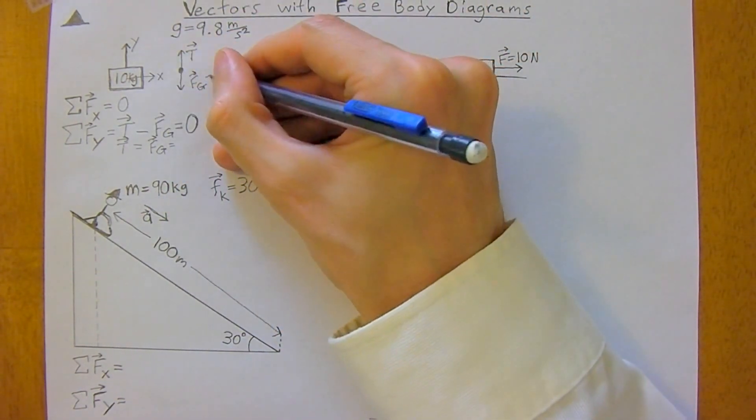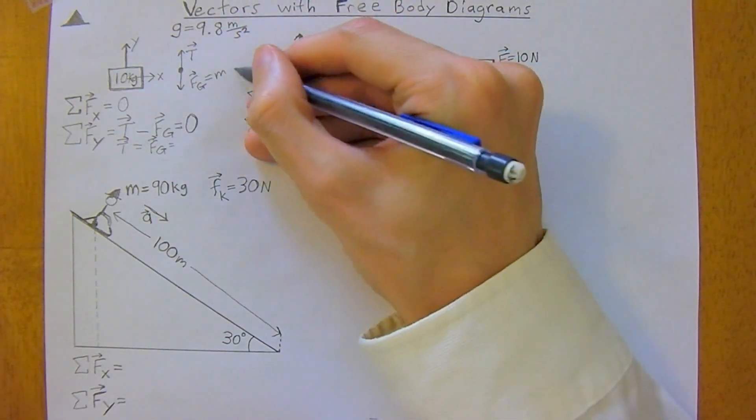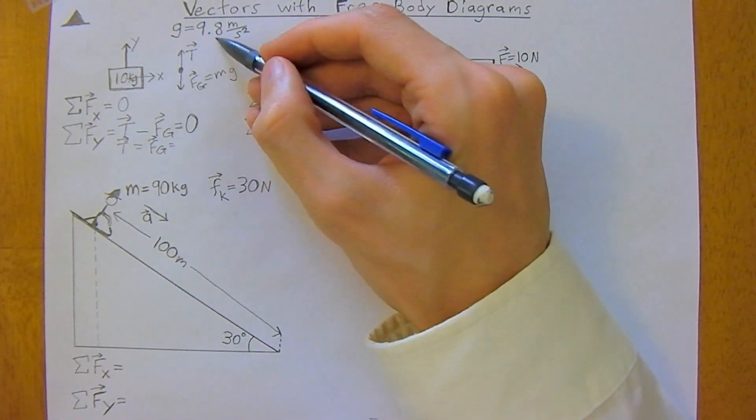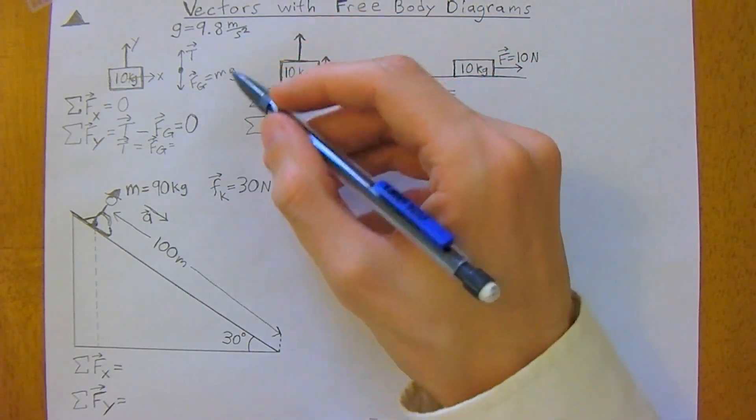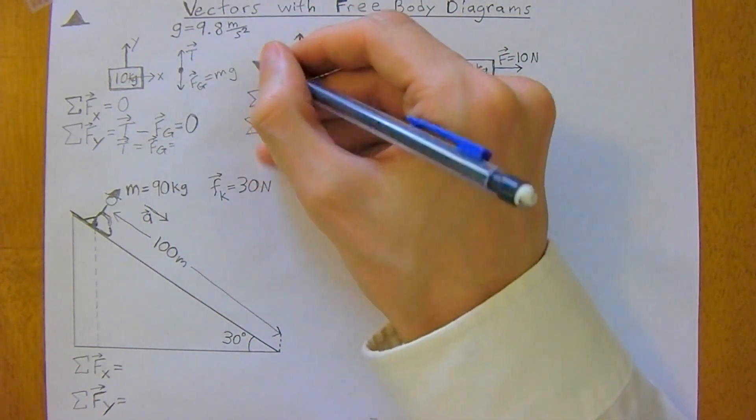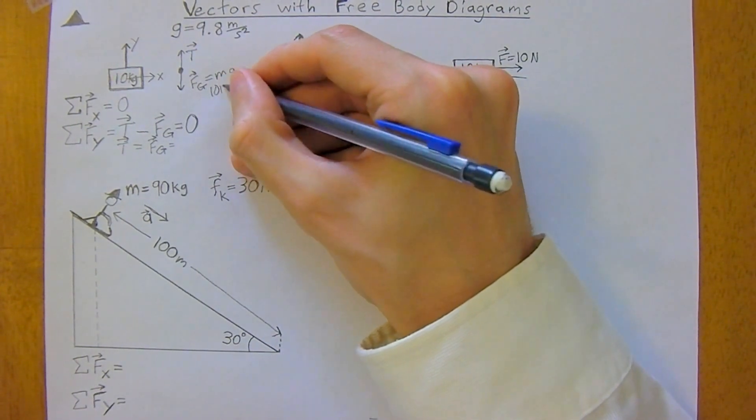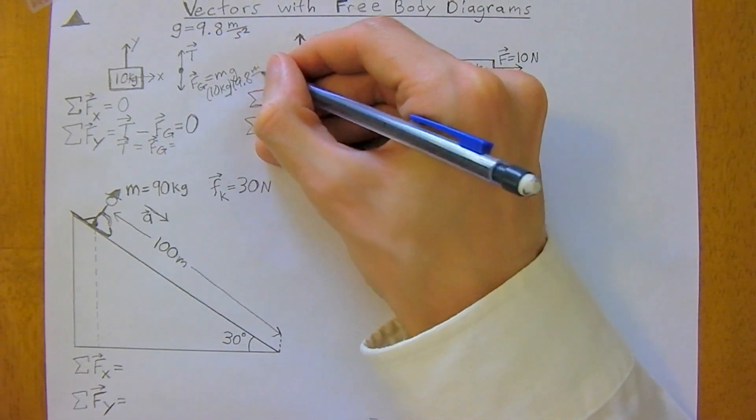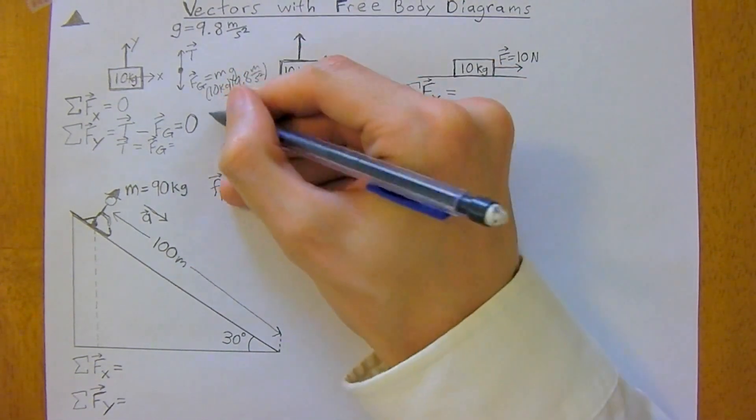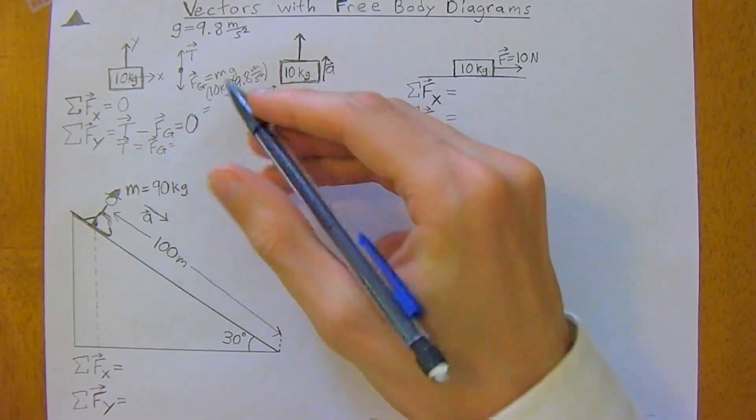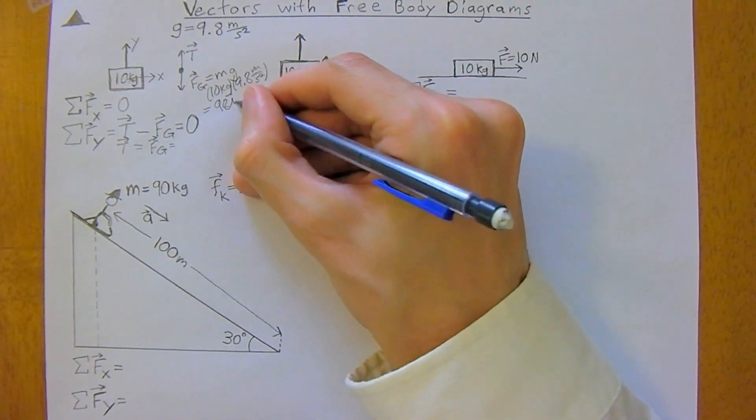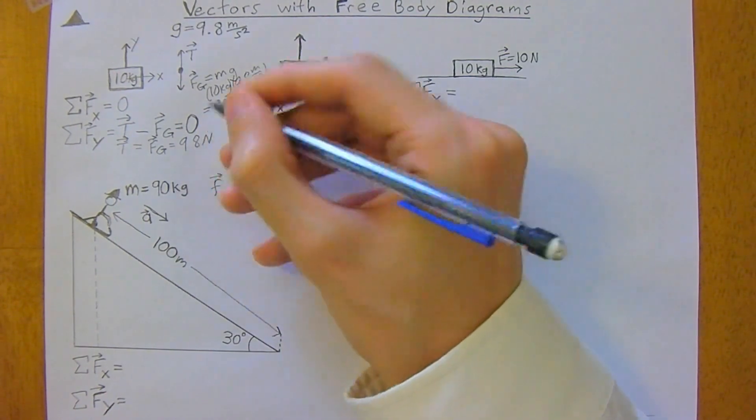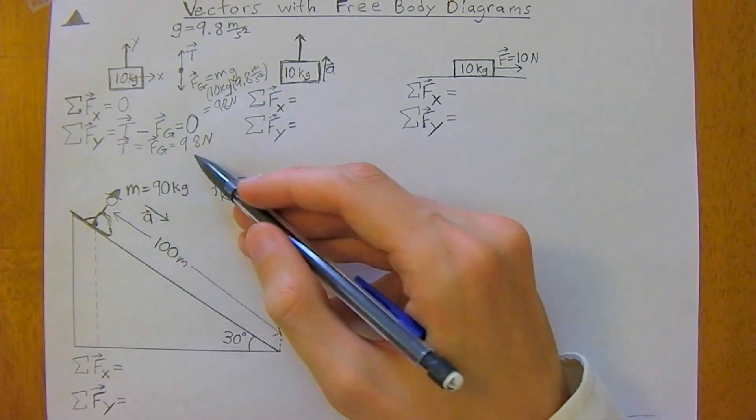And the tension in the rope will be equal to the force of gravity pulling down. And we know that the force of gravity is the same as saying the mass times gravitational acceleration of Earth. And g, of course, is 9.8 meters per second squared. So 10 kilograms times 9.8 meters per second squared. So force of gravity is going to be 98 newtons. So the tension equals the force of gravity, which equals 98 newtons.